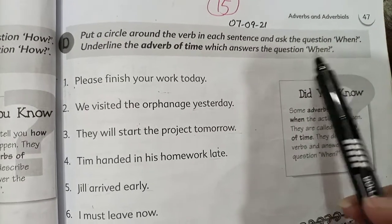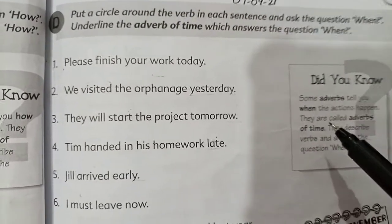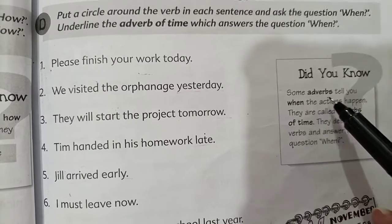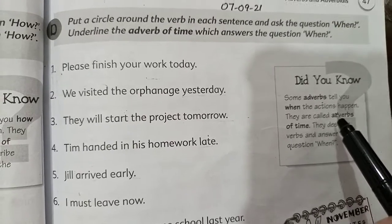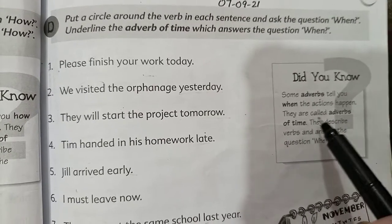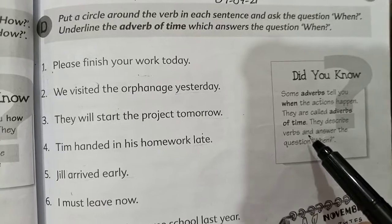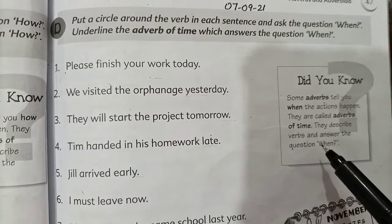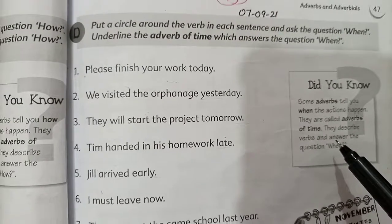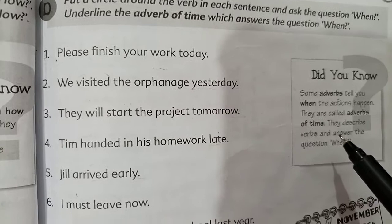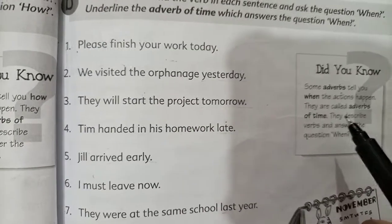The answer is 'when'. You have to put a circle around the verb, then ask the question 'when'. They are called adverbs of time — they describe the verb, inform the verb, and answer the question 'when' or tell us when something has happened. Words like 'today' are all adverbs of time.